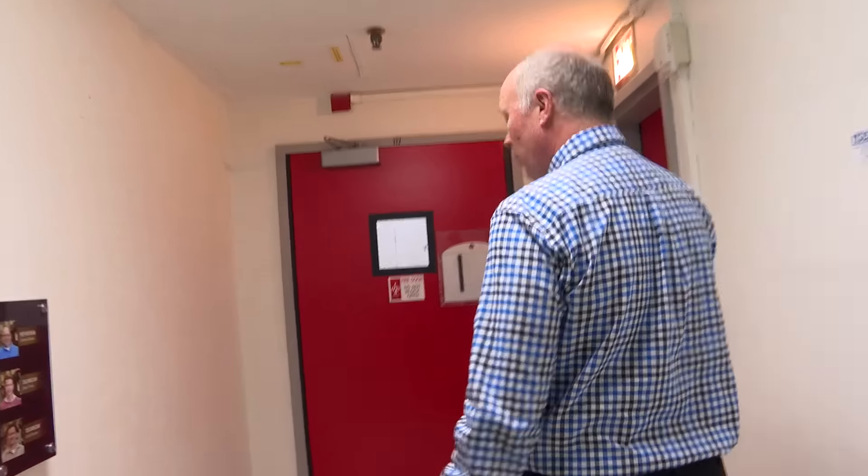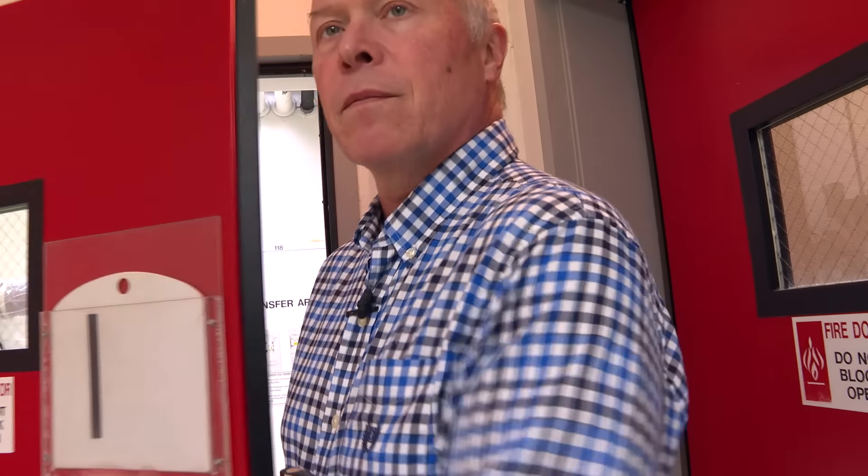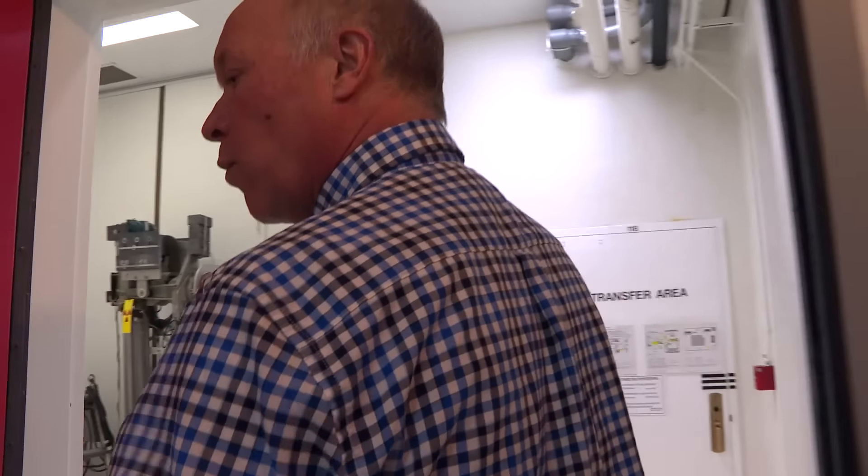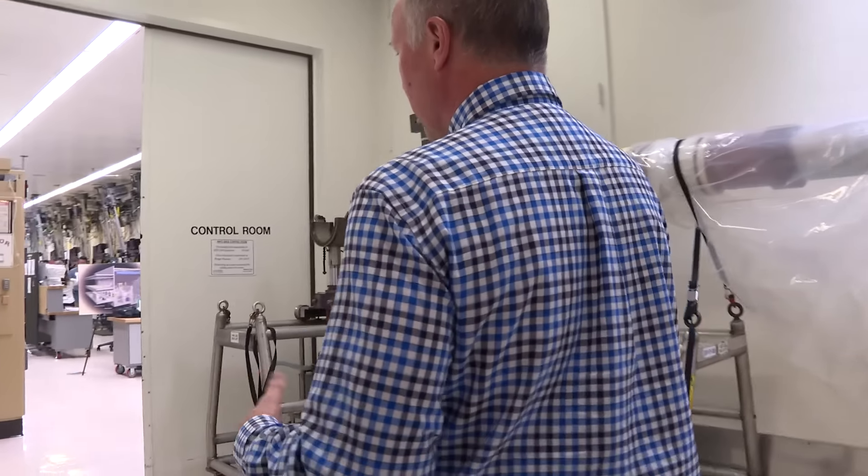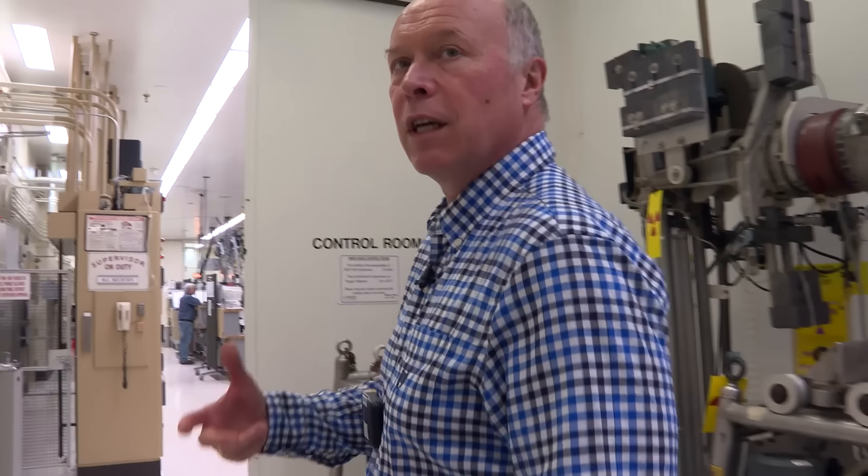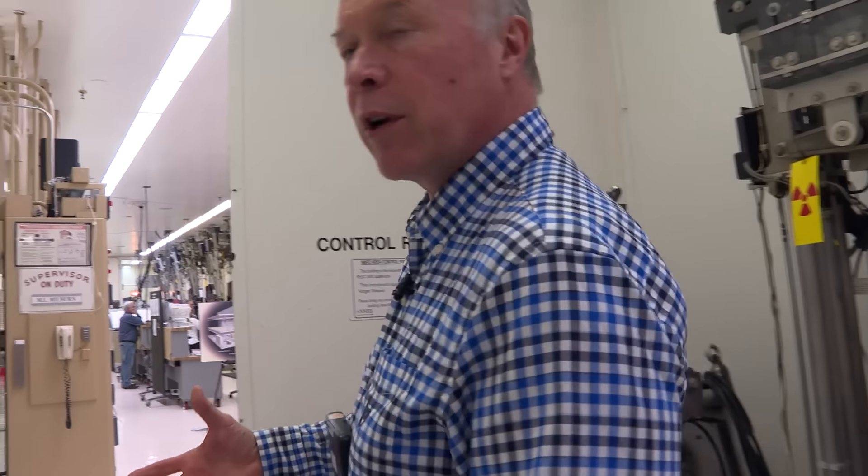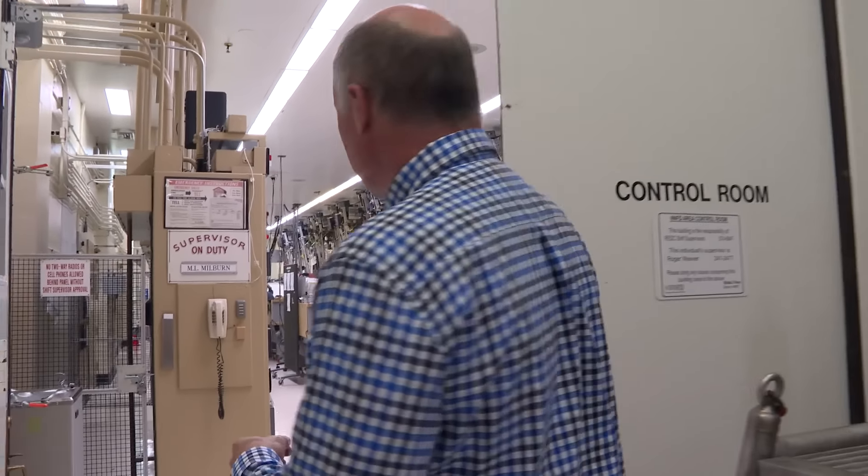Now what we call is the control room. This is where we have heavily shielded hot cells. And that's how we work on the irradiated targets safely so that we can safely make the plutonium and give that to NASA.